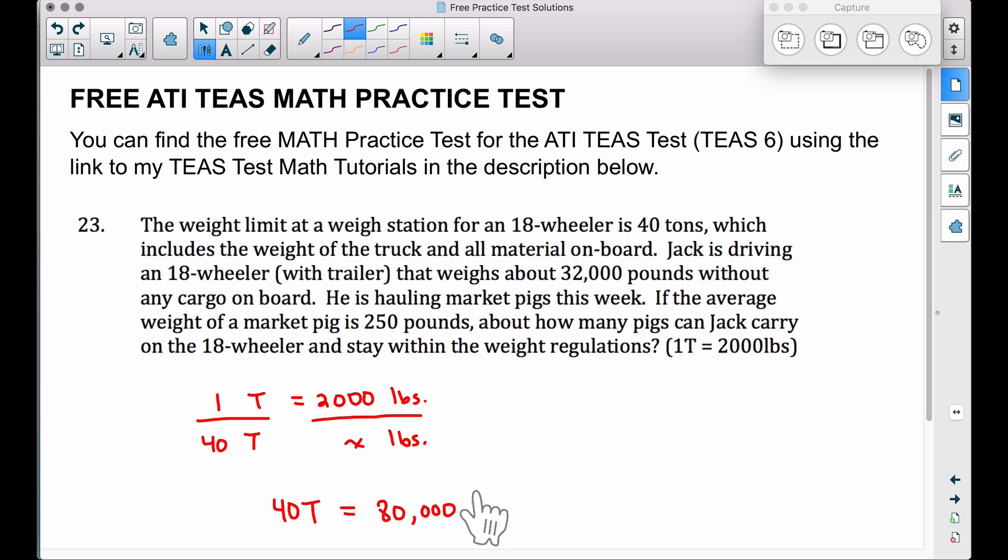Now, the reason why this is a good idea to stick with the 80,000 pounds is because we have the weight of the truck without any cargo at 32,000 pounds and also the pigs. The average weight of a pig is 250 pounds. Everything is in pounds now. So, this number here represents the weight limit. That's the weight limit for an 18-wheeler with all the cargo on board, 80,000 pounds.